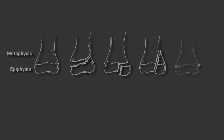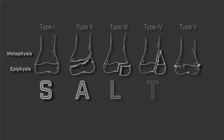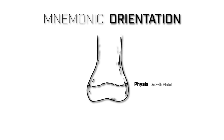Now that we have a basic idea of the anatomy of our long bones, here are the different types of Salter-Harris fractures. They are classified from class 1 through class 5. There is a mnemonic to help you remember the different classifications — it's easy because the mnemonic is SALTER. The distal portion of the bone is always facing downward, or inferior to the growth plate, and the metaphysis is always superior to the growth plate. This is important because the mnemonic depends on this orientation.